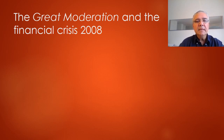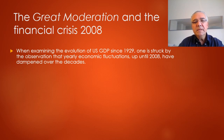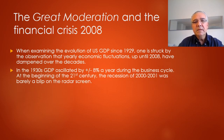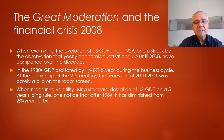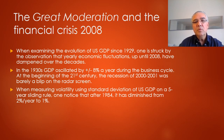So what is the great moderation, and what is the ensuing phenomenon we know as the financial crisis of 2008? When we examine the evolution of US GDP from 1929, one is struck by the observation that economic fluctuations seem to be dampening over time. In the 1930s, we have fluctuations on a yearly basis of about plus or minus 8% in GDP. At the beginning of the 21st century, the 2000–2001 recession registered barely as a blip on the radar screen. When measuring volatility using standard deviation on a five-year sliding window, after 1984 volatility in these fluctuations goes from about 2% a year to less than 1%.